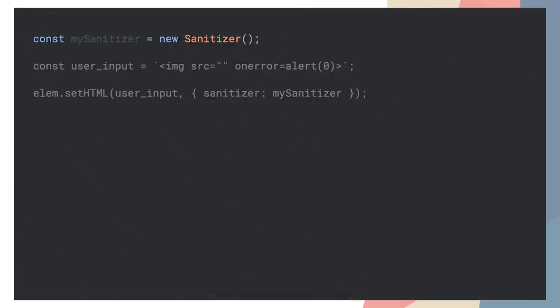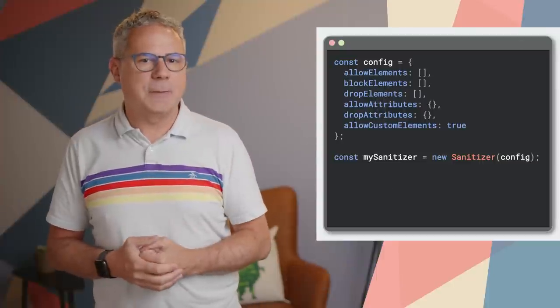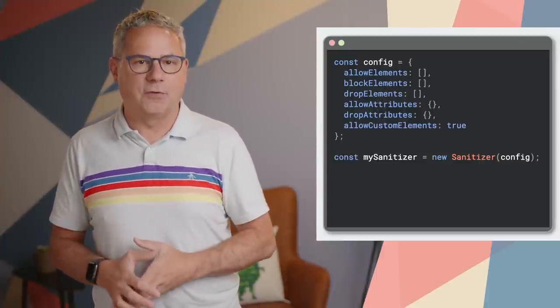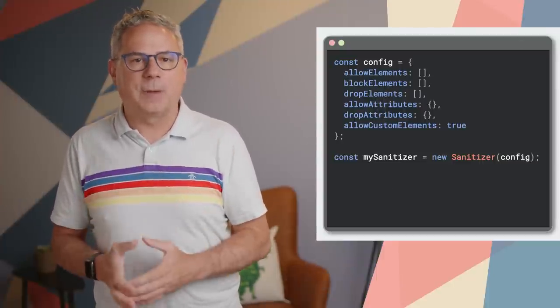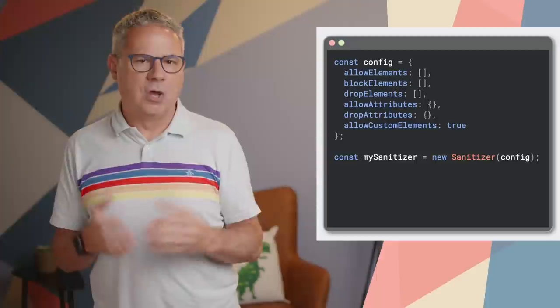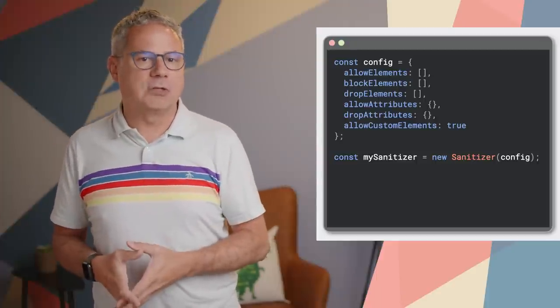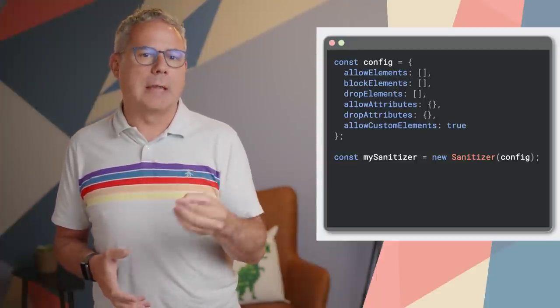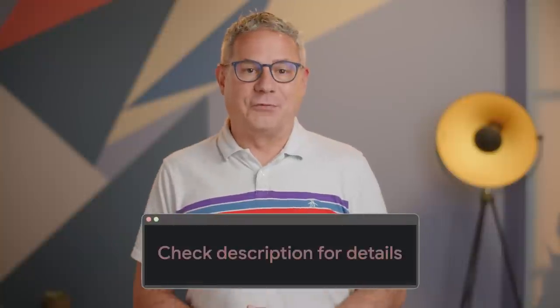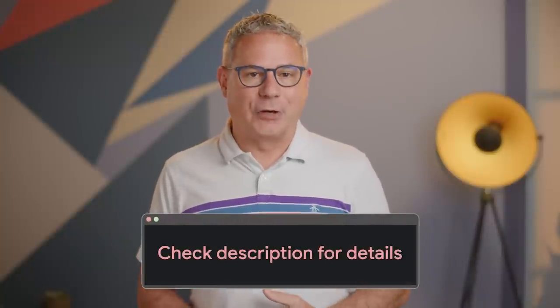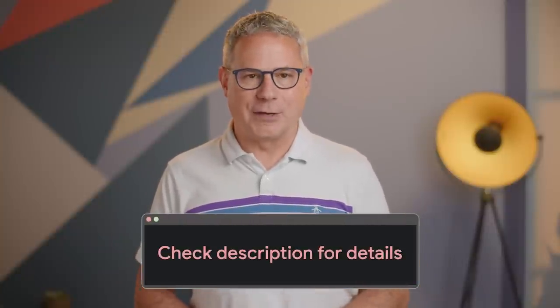To use it, create a new instance of the Sanitizer API, then call setHTML on the element that you want to insert the sanitized content into. The Sanitizer API is designed to be safe by default and allows you to specify different config options — for example, dropping certain elements or allowing others. Check out "Safe DOM manipulation with the Sanitizer API" on web.dev for more details.